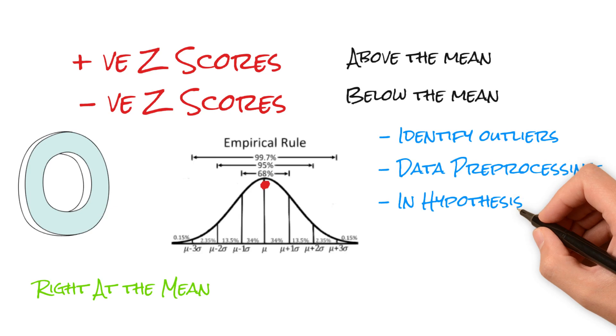Another critical application is hypothesis testing. Z-scores help us determine the significance of our results. For example, a Z-score of 1 signifies a data point that's one standard deviation above the mean, while a Z-score of minus 1 means it's one standard deviation below.